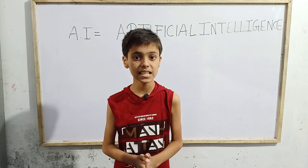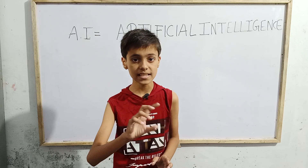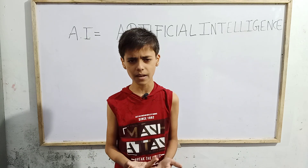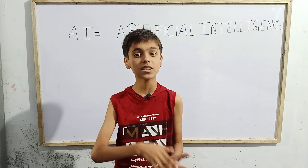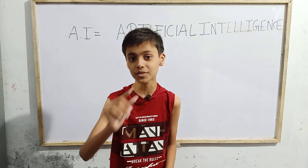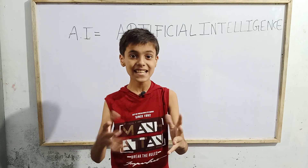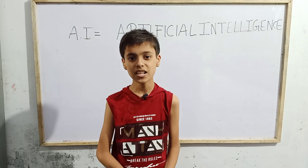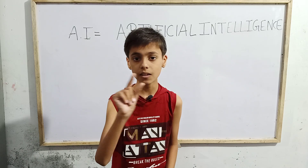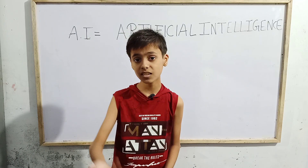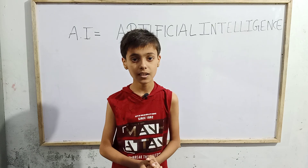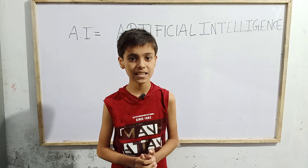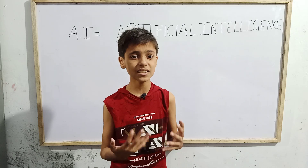For example, we all know about the famous company Tesla. Tesla has invented a new type of car — a self-driving car. This car can work without a driver. We only have to choose our destination, sit in the car, and it will automatically take us there using GPS and many sensors. If any barrier comes in the way, the car makes a turn and goes through another route. That is how the self-driving car works.